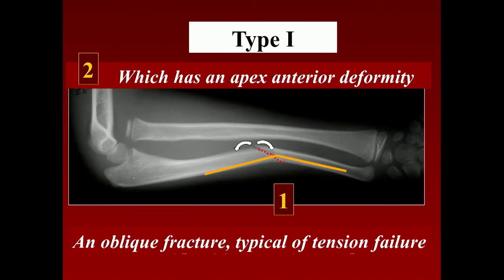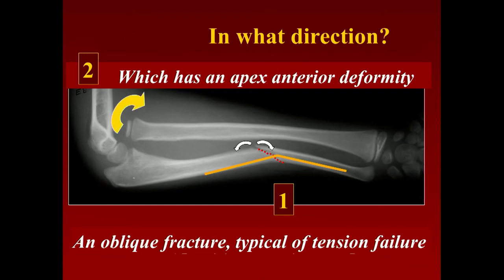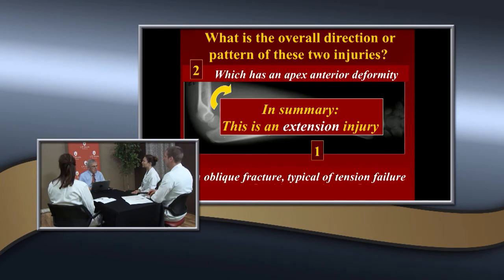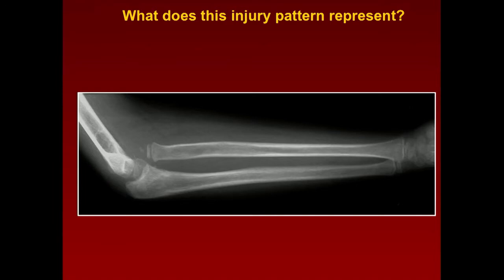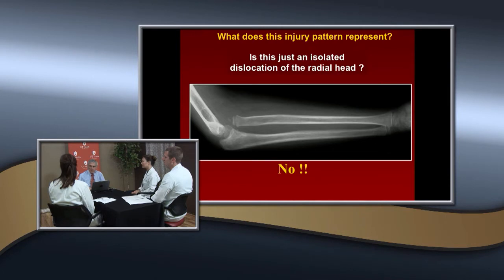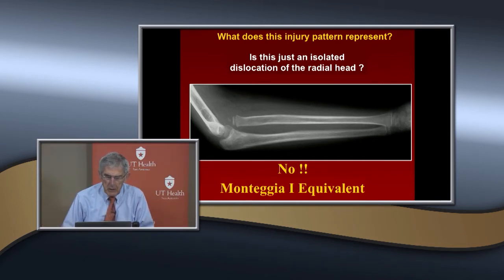Years ago, this was defined as an isolated dislocation of the radial head. But it's not a single entity. The other component is bowing of the ulnar shaft — plastic deformation — which is often totally missed. The ulna should be a straight line on the posterior aspect. If you see a bow and don't recognize and correct that plastic deformation, you cannot get the radial head back in.